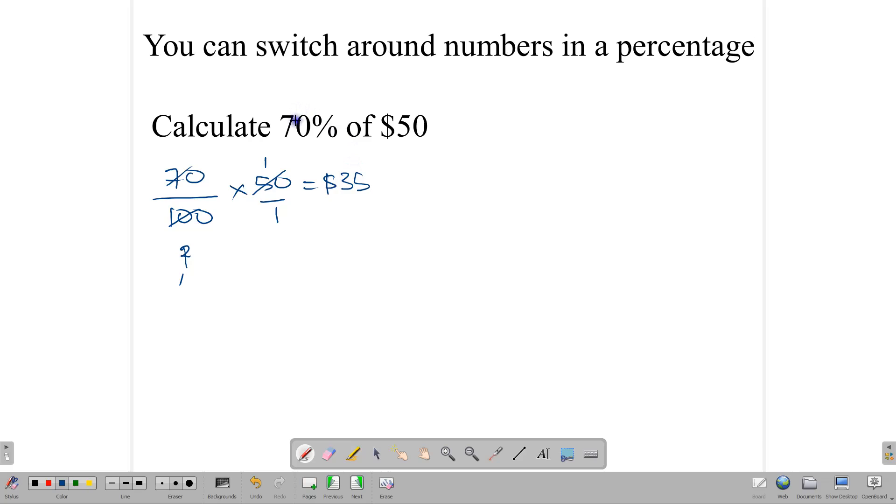Importantly, though, because you are multiplying, and remember that multiplication is commutative, you can always switch the numbers in a percentage. So, calculating 70% of 50 is also the same thing as calculating 50% of 70. And so, you can switch the numbers depending on the question, depending on what part seems easier to you. You can always switch them around, and it will give you the same answer. So, 70% of 50 is the same thing as 50% of 70. And so, we write 50 over 100, 50 times 70.